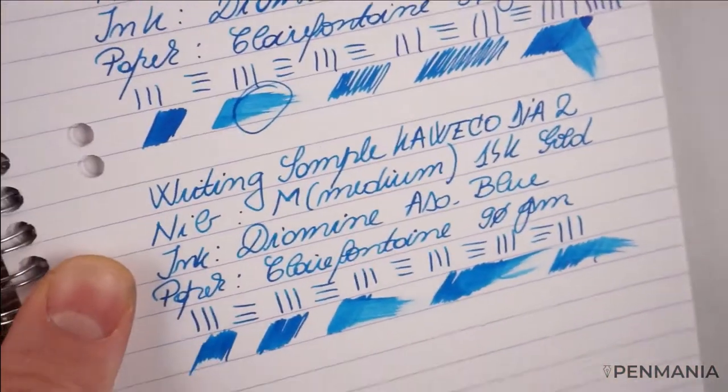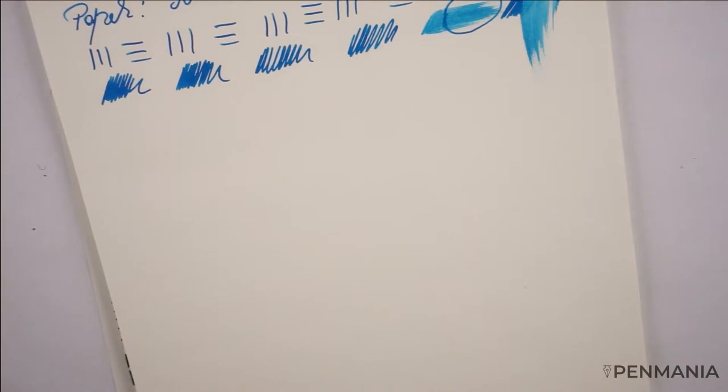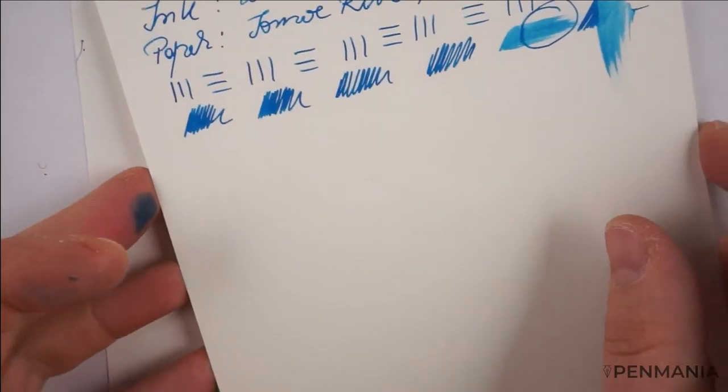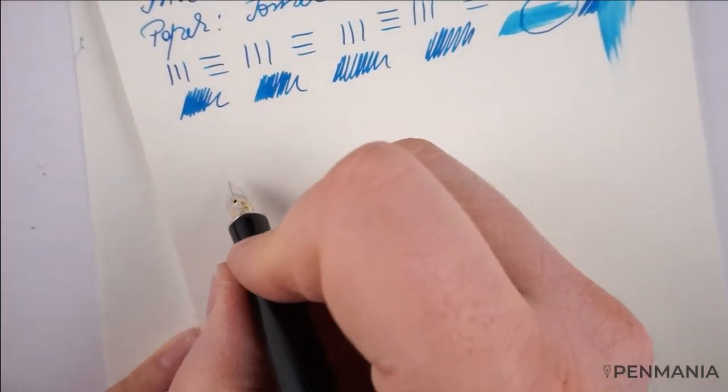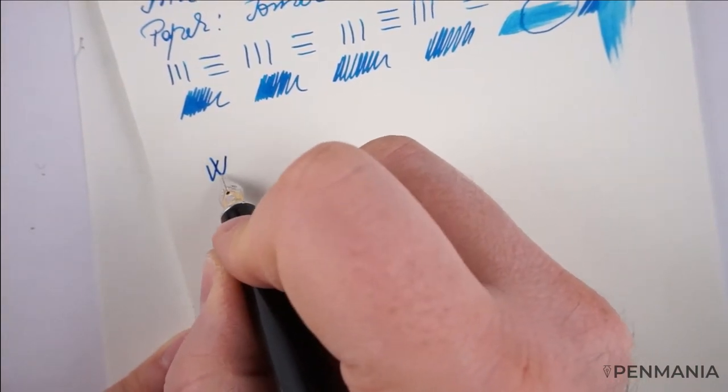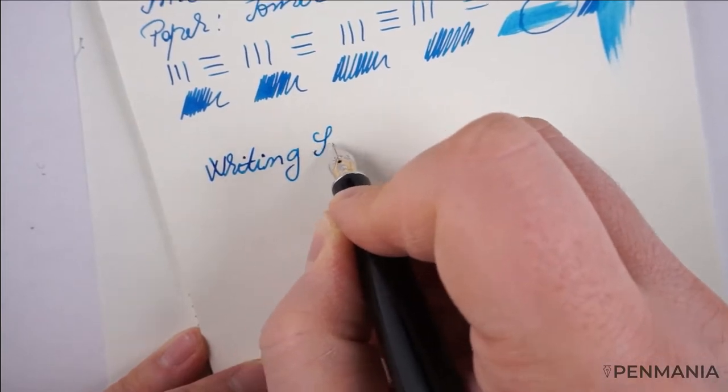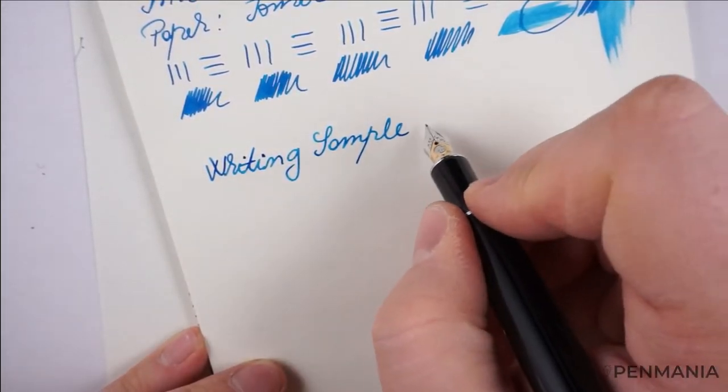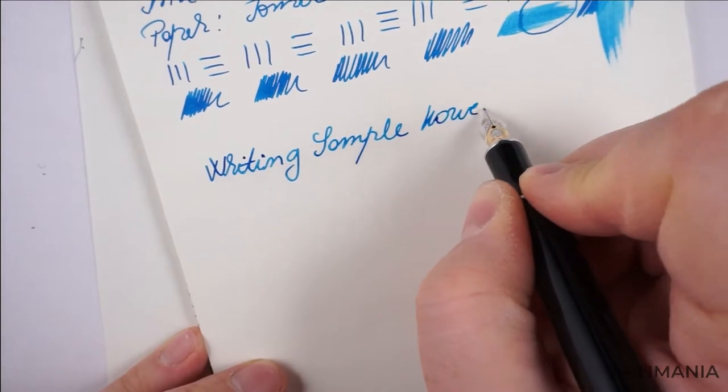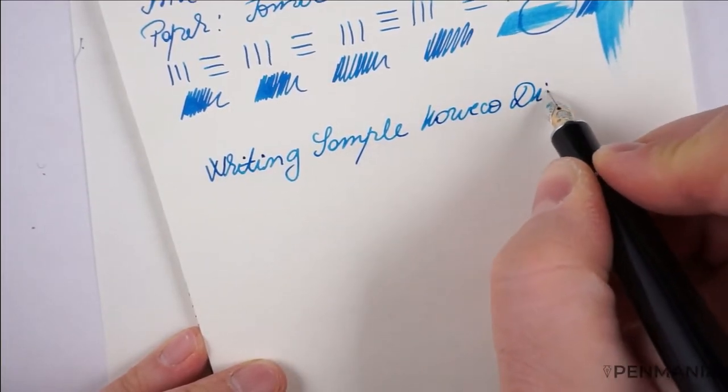That was the Clairefontaine. Let's see the Tomoe River paper, how it will behave with the gold nib. So we have writing sample, Caveco Dia 2, the nib is a medium 14k gold.